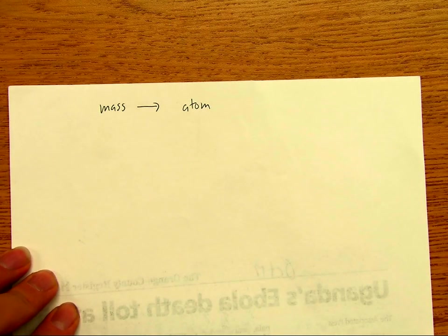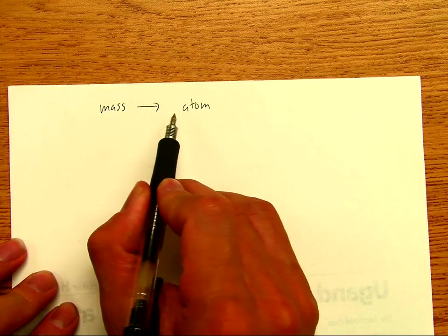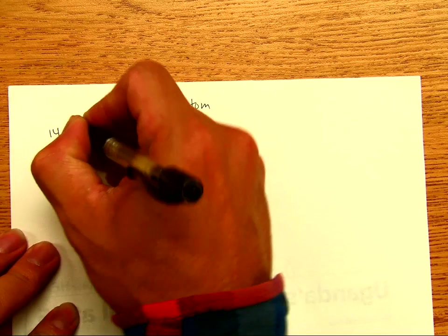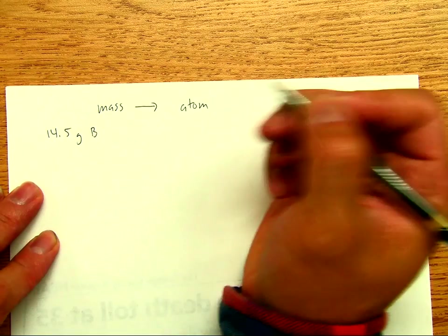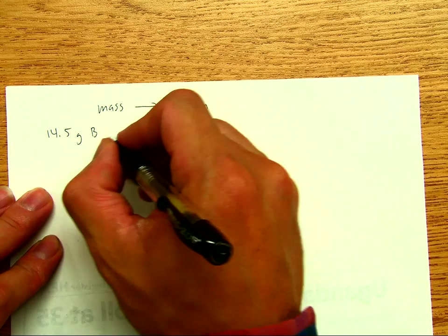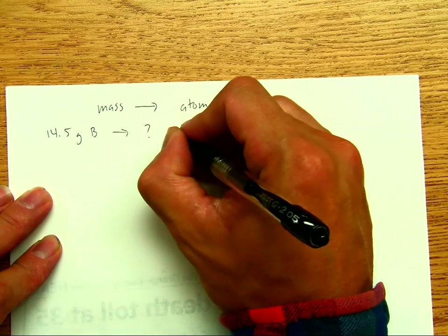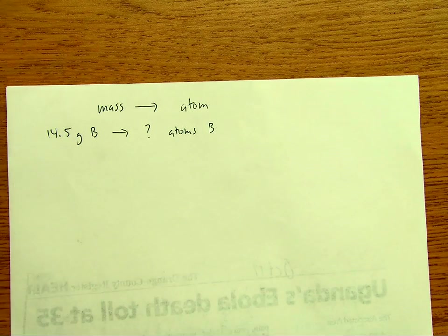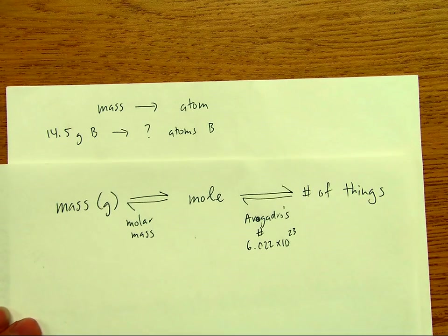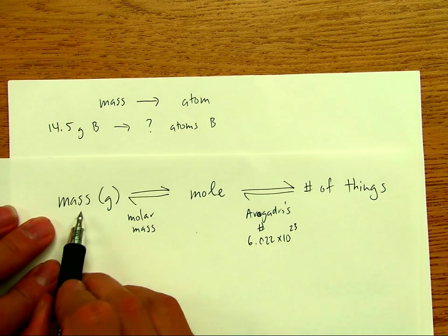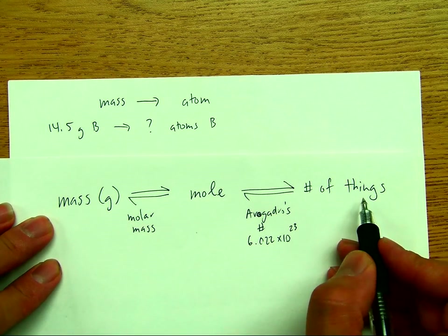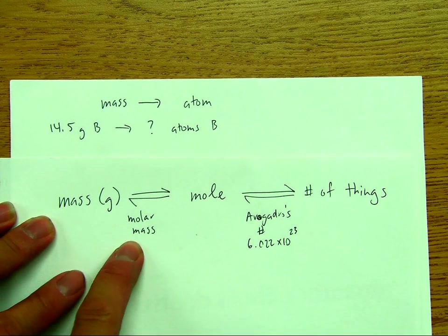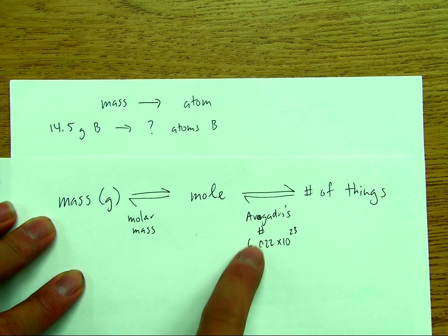In these two examples we'll convert from mass to atoms or number of things. We have 14.5 grams of B, which stands for boron, and we'll convert that into atoms of boron. Looking at our concept map, mass is on the left and we want to convert to the number of things. This is a two-step problem: from mass to mole using the molar mass, and then from mole to number of things using Avogadro's number.